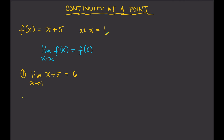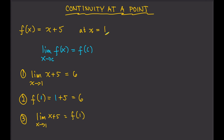Next, find f(c) — in this case, f(1). So f(1) = 1 + 5 = 6. The limit of x + 5 as x approaches 1 is 6, and f(1) = 6. Since they are equal, we conclude that f(x) = x + 5 is continuous at x = 1.